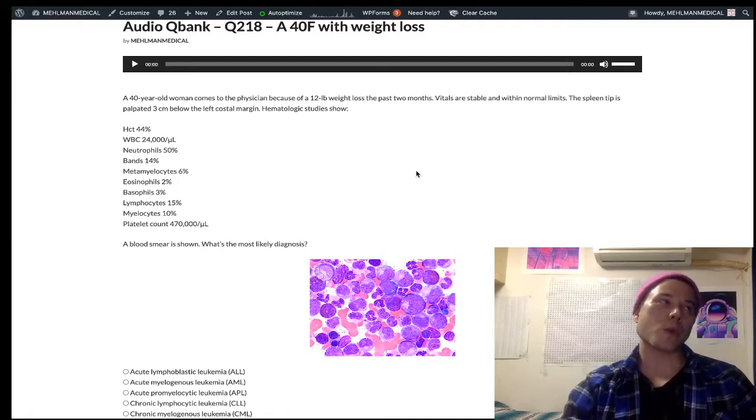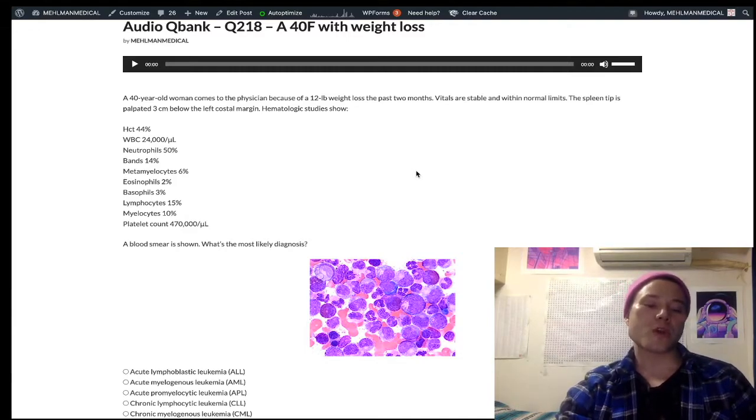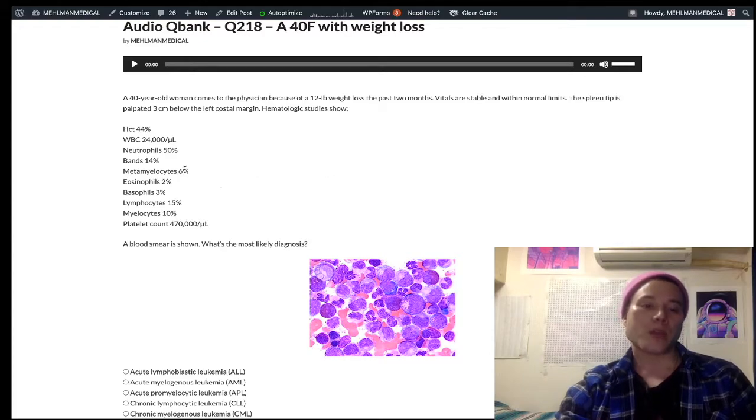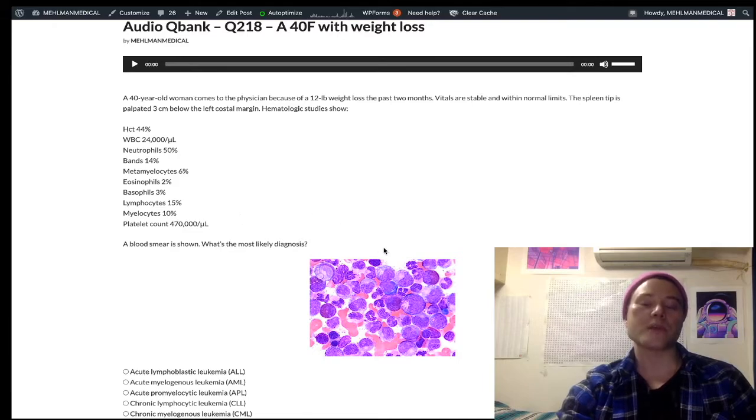Also worthy of note that if they mention something called leukocyte ALP, leukocyte alkaline phosphatase, it's increased in leukemoid reaction, it's decreased in CML. It's just a marker within leukocytes. But my point of consolidation here is if you see metamyelocytes, myelocytes, promyelocytes on a breakdown in the question, I would say 9 out of 10 questions on USMLE, it's going to be CML, 1 out of 10, it's leukemoid reaction.